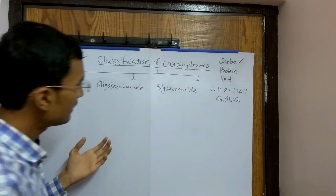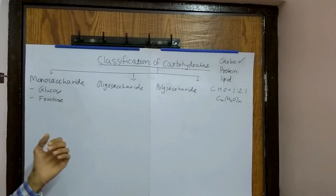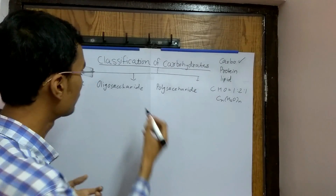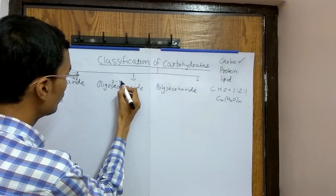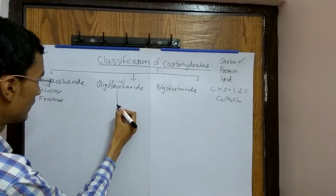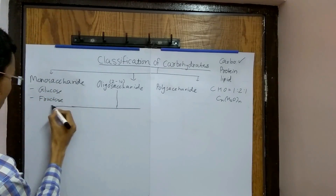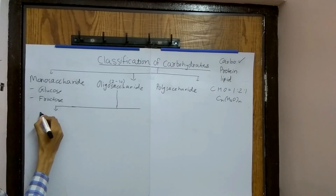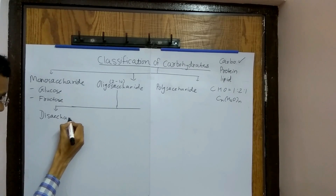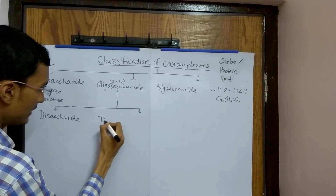Oligosaccharide contains 2 to 10 molecules of monosaccharide, so we can say it contains 2 to 10 monomers. It is further divided into two types: first is disaccharide and second is trisaccharide.